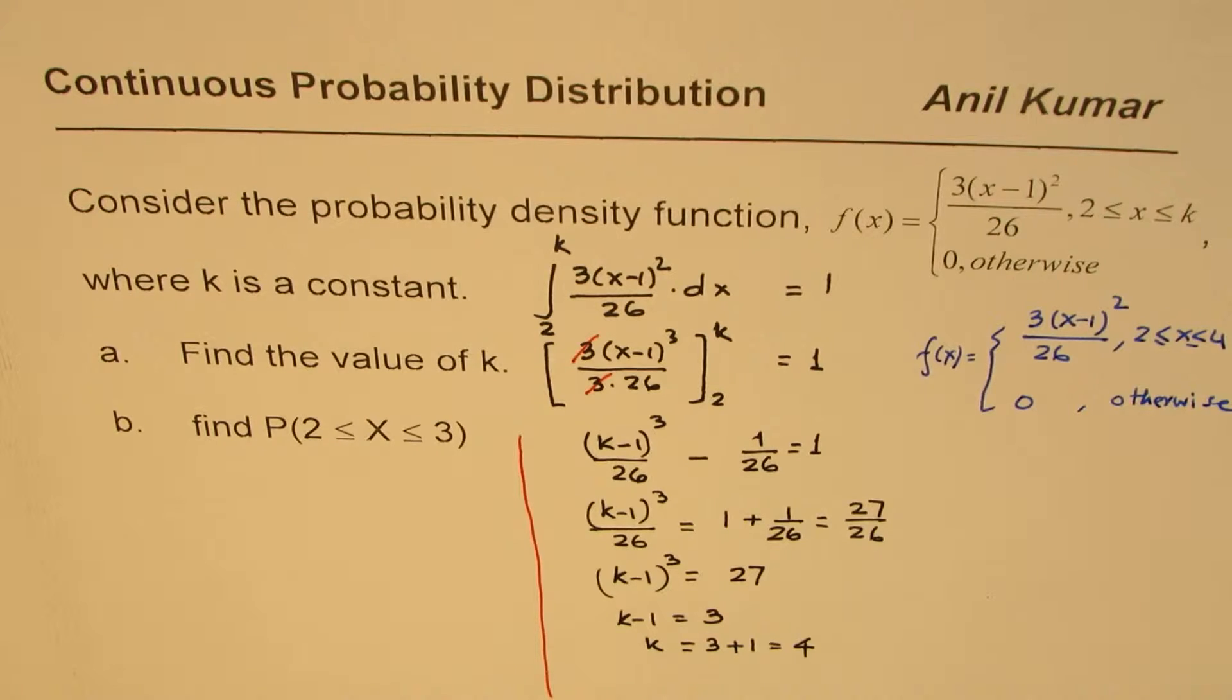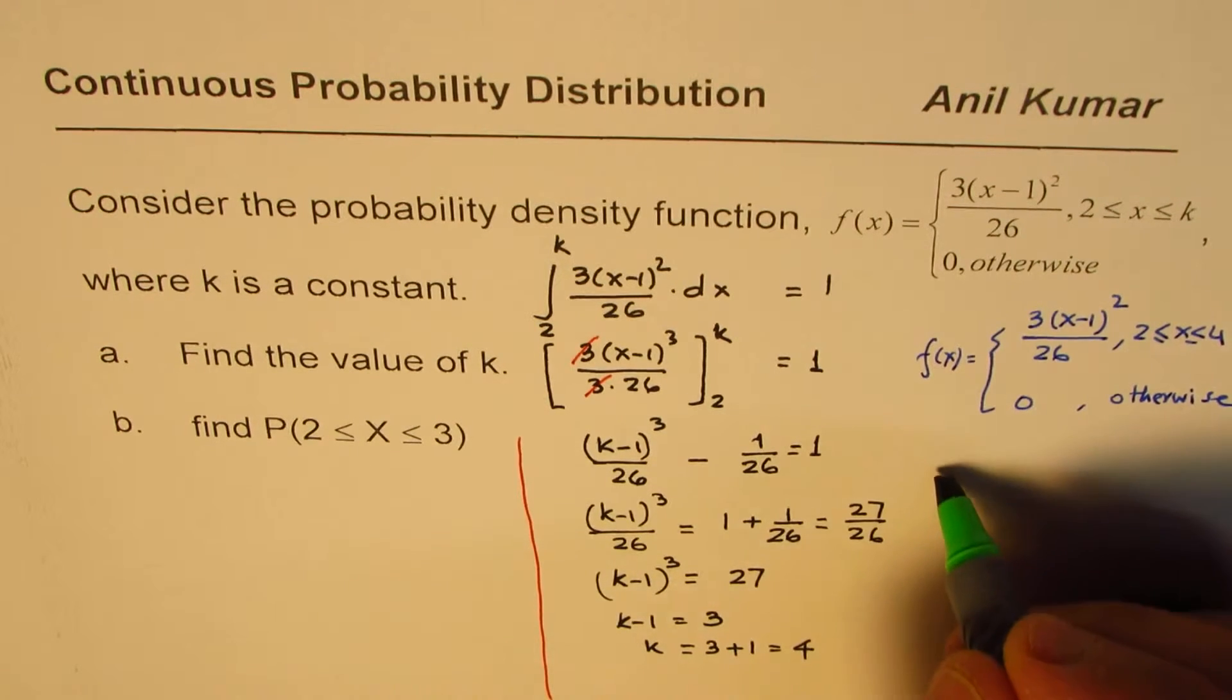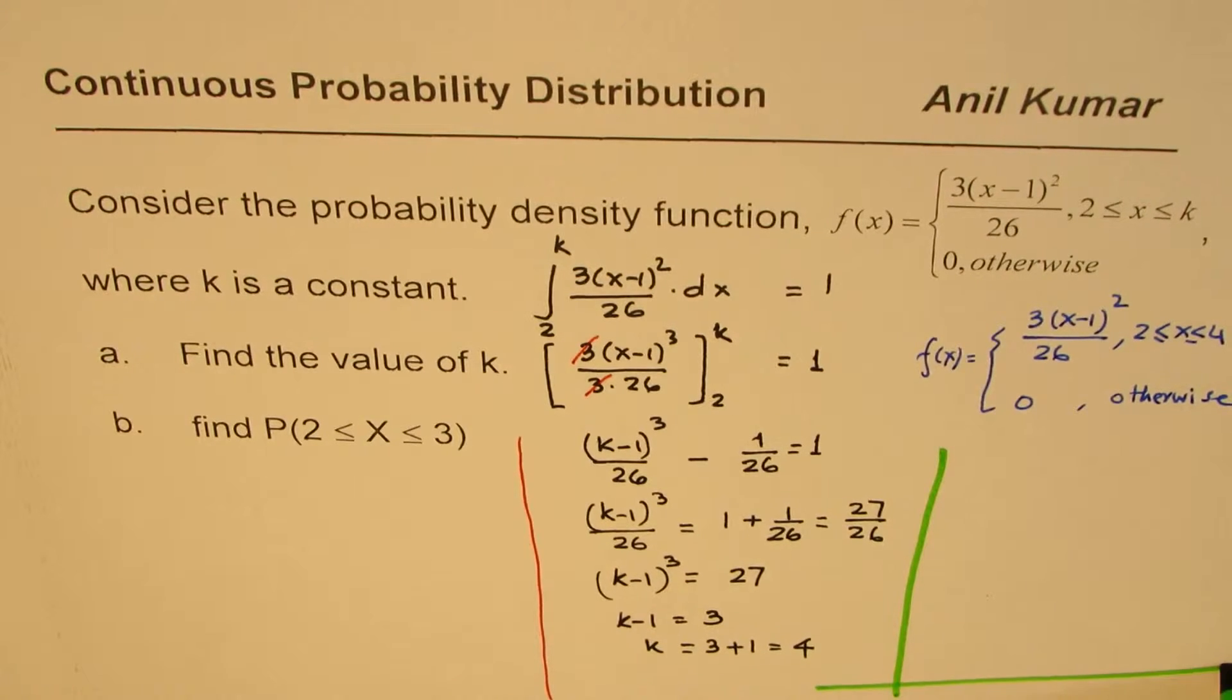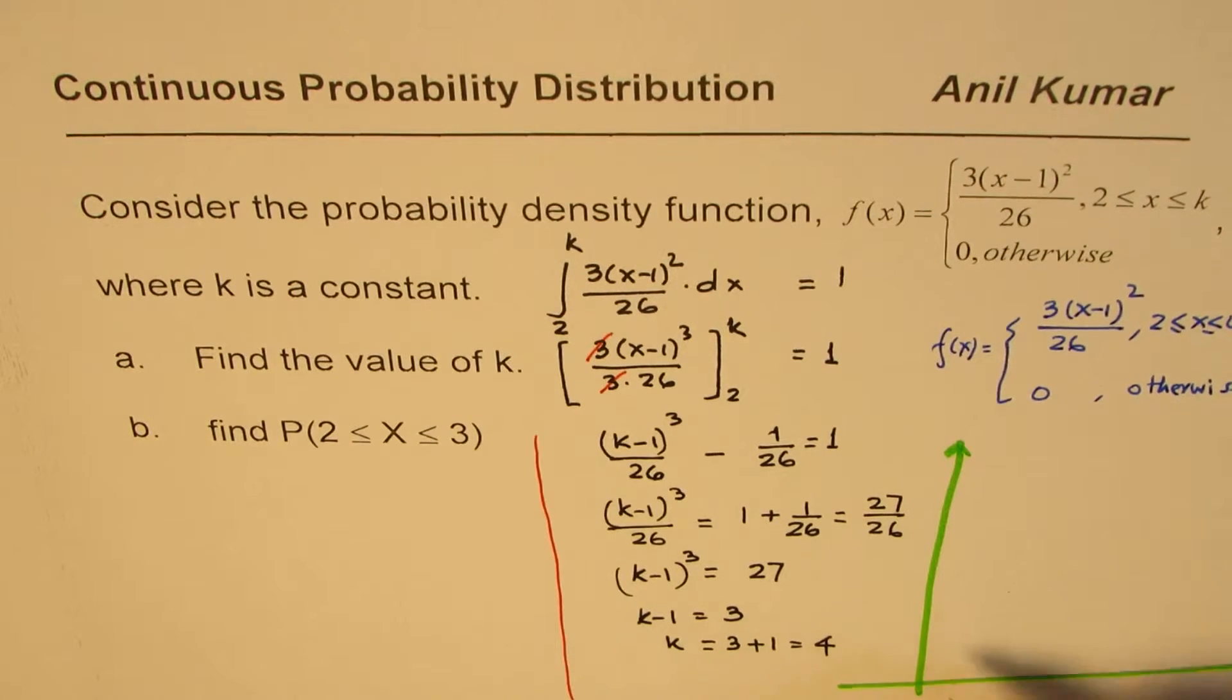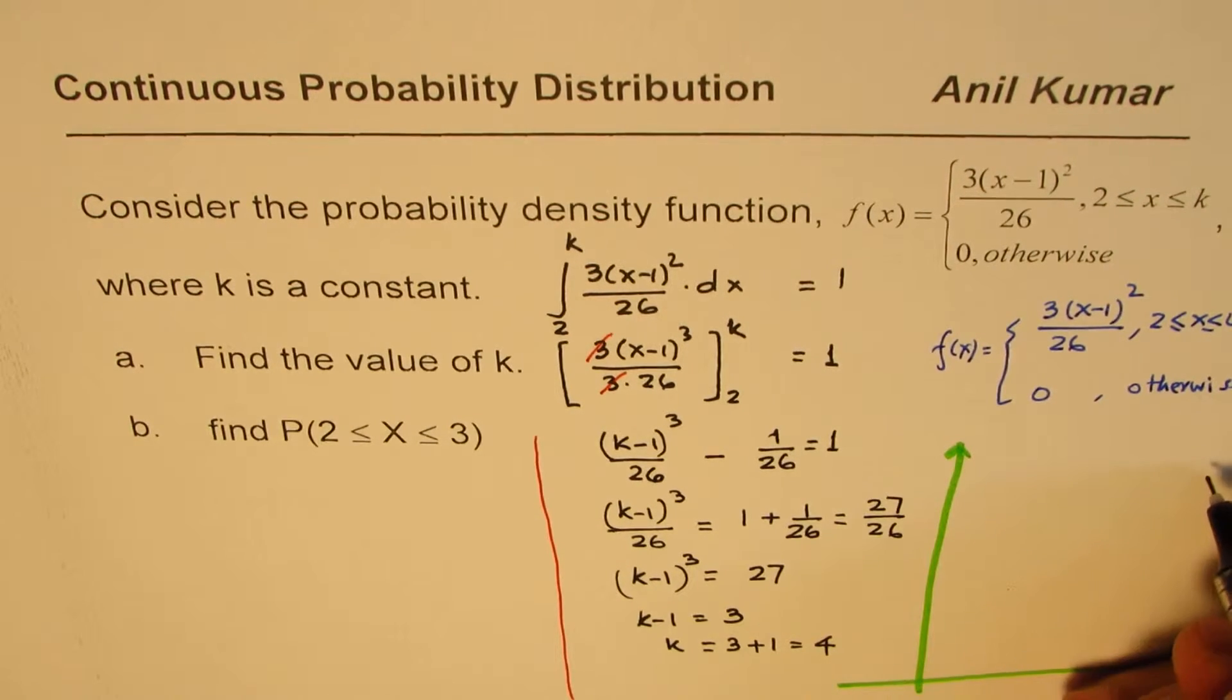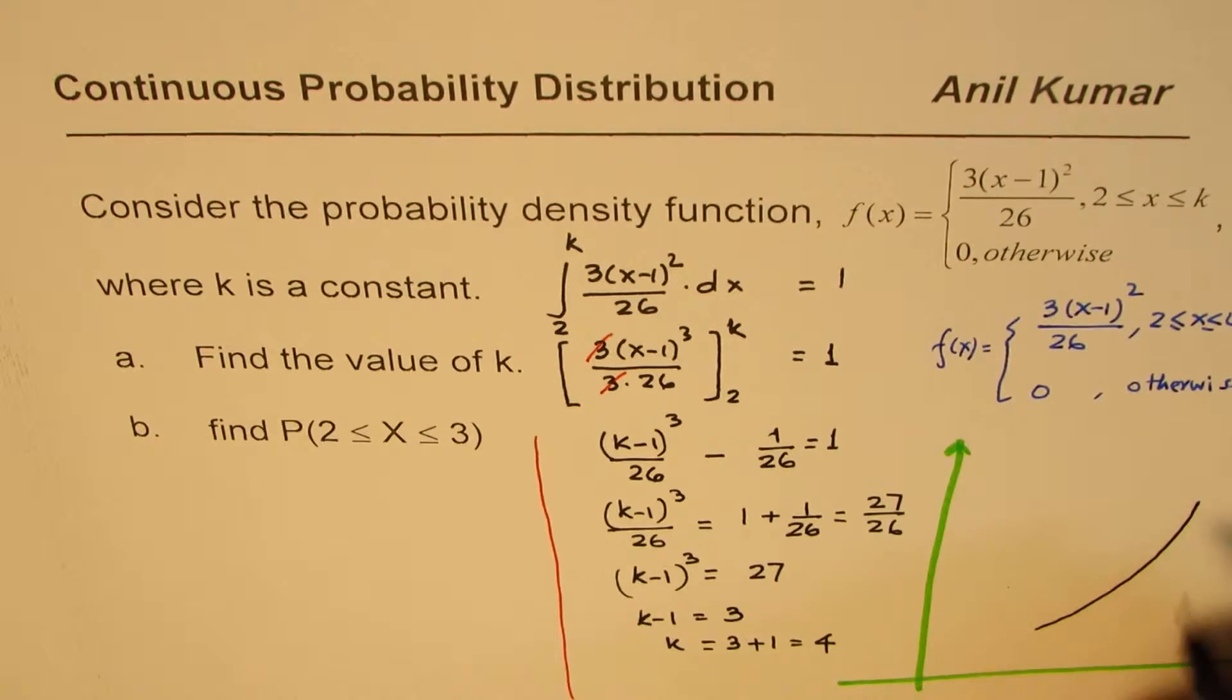So let us sketch this function, just to get an idea. (x-1)² is a parabola with vertex at 1. So let us say, kind of 1 is a parabola like this, so it is starting from 2 to 4, so let me just sketch roughly, kind of like this.